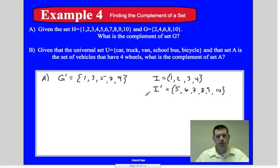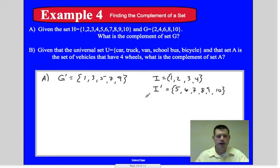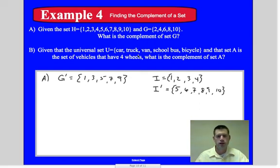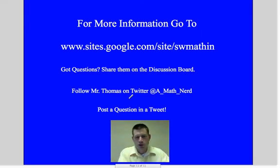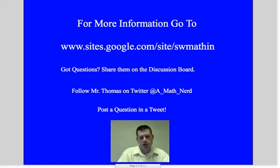Part B: given universal set U equals {car, truck, van, school bus, bicycle} and set A is the set of vehicles that have four wheels, what is the complement of set A? Write that complement set and we'll check it. That's all for today — we'll talk more in class about sets and subsets. Write down any questions and bring them in.